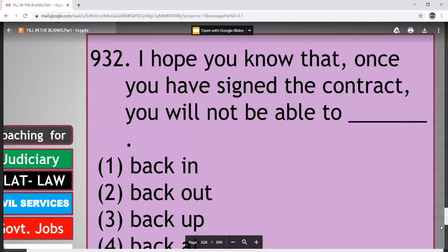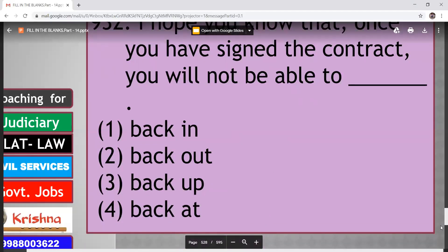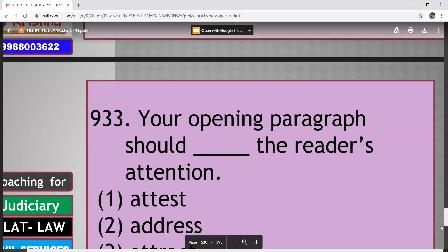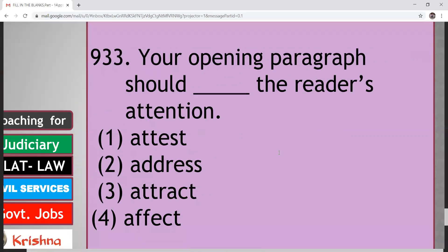I hope you know that once you have signed the contract, you will not be able to dash. Back in, back out, back up, back in. So you have to get back out to withdraw from a commitment. It means back out. That is second option. Next. Your opening paragraph should dash the reader's attention. Attest, address, attract, affect. So here your answer will be attract. That is third option.